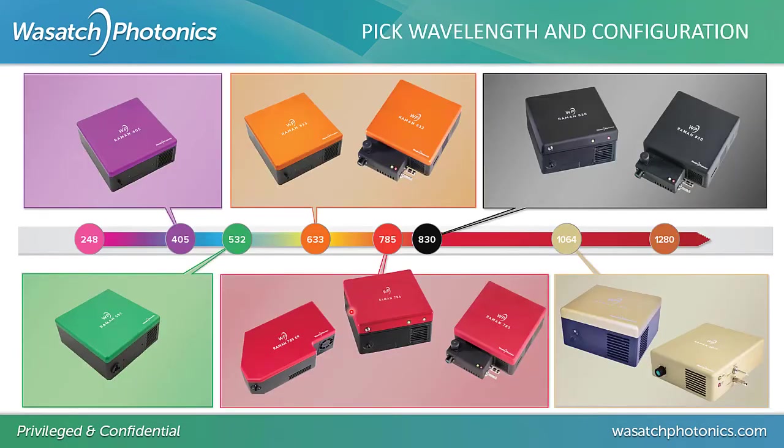Wasatch Photonics provides a huge variety of Raman systems — a collection for all kinds of different laser wavelengths. Why so many different wavelengths? You might be interested in a specific resonance enhancement, or you want to avoid a certain type of fluorescence — that dictates the laser wavelength. And you have the choice: if you want the laser integrated right in the spectrometer — like my unit here — that's possible. Or if you want the Raman optics also included in the spectrometer for one super-compact package — just add your sample and go — we've got you covered.